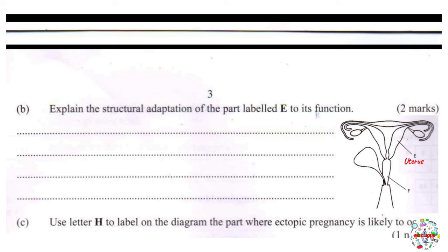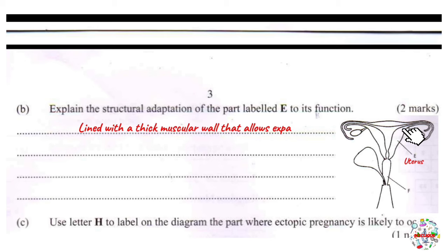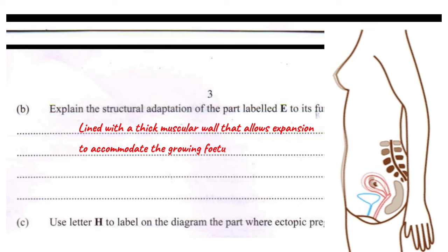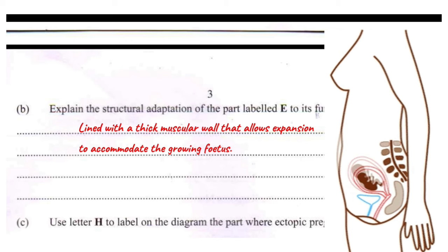The uterus has a thick muscular lining. This wall is very important because it's made of muscles, which have the unique ability to expand. By expanding, it provides more space that can accommodate the growing fetus.